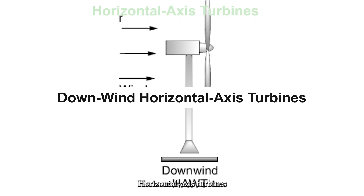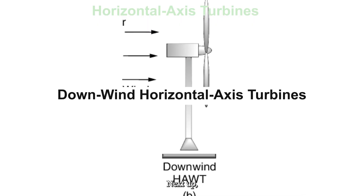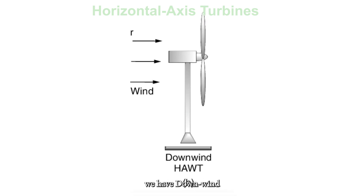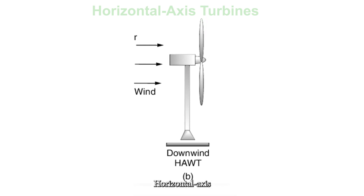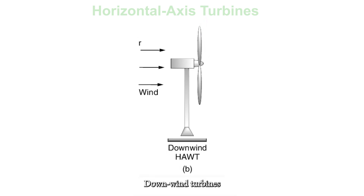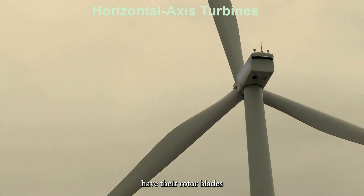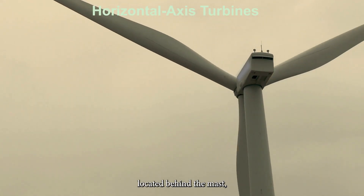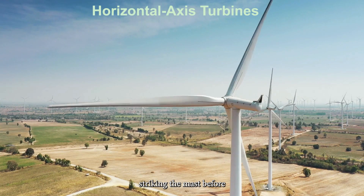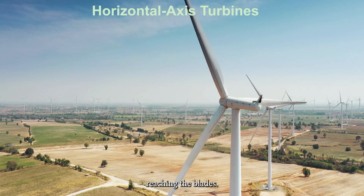Next up, we have downwind horizontal axis turbines. Unlike upwind turbines, downwind turbines have their rotor blades located behind the mast, with the wind striking the mast before reaching the blades.